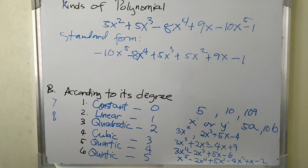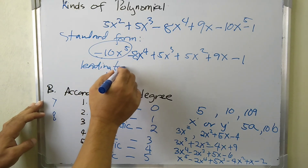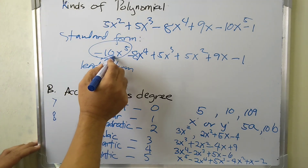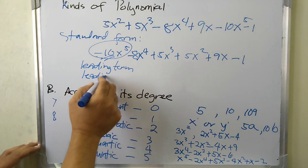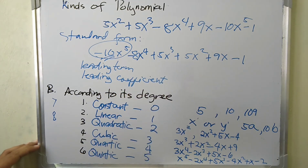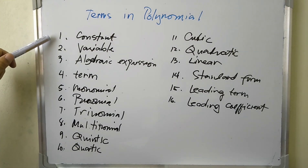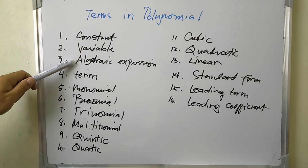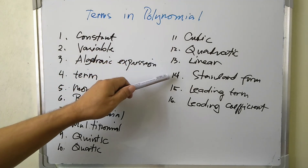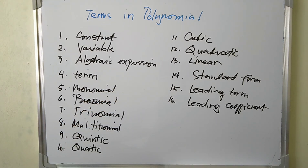In this standard form, the first term is called the leading term, and its coefficient is called the leading coefficient. These are the terms we have studied in polynomial: constant, variable, algebraic expression, term, monomial, binomial, trinomial, multinomial, quintic, quartic, cubic, quadratic, linear, and also standard form, leading term, and leading coefficient. I think you will be ready for the next lesson.